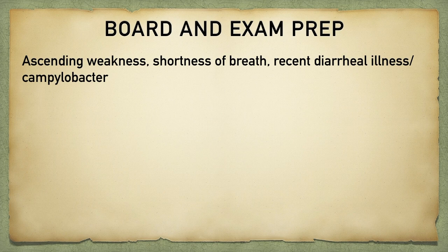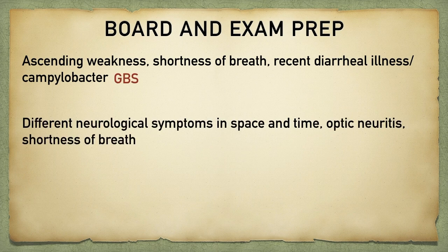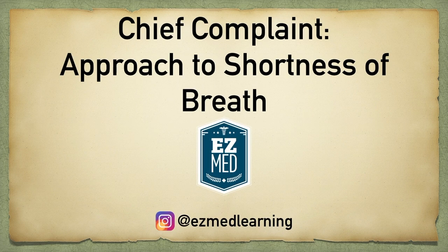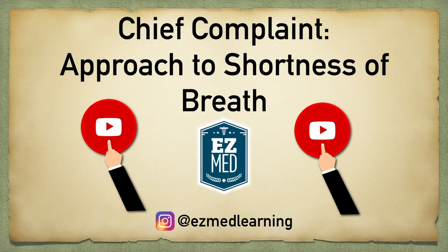Three more examples: ascending weakness with shortness of breath and a history of recent diarrhea, possibly from Campylobacter — think Guillain-Barré syndrome. A patient with neurological symptoms affecting different areas at different times, history of optic neuritis, and shortness of breath — consider MS. Weakness that worsens with prolonged activity along with shortness of breath — think myasthenia gravis. Hopefully this provided an organized approach to the patient with shortness of breath. Please consider subscribing to the Easy Med channel so you don't miss future videos that make medicine easy.